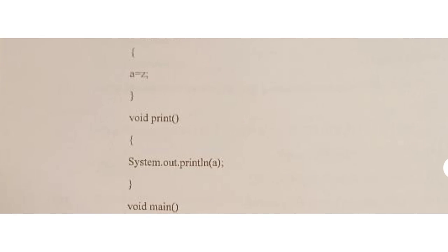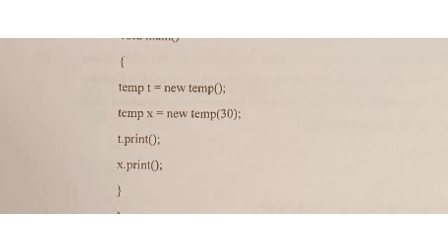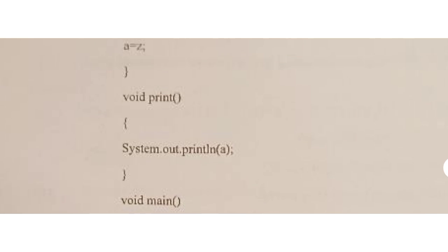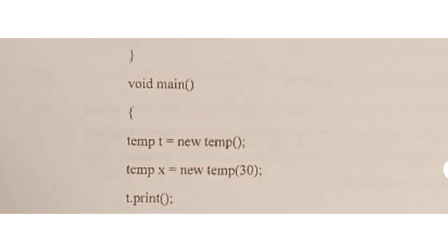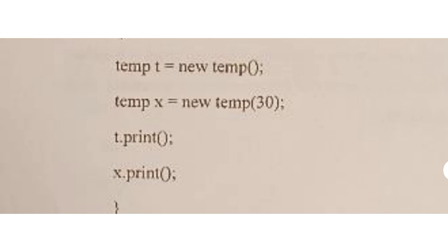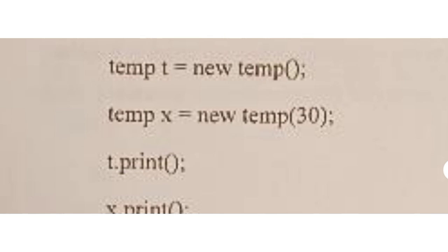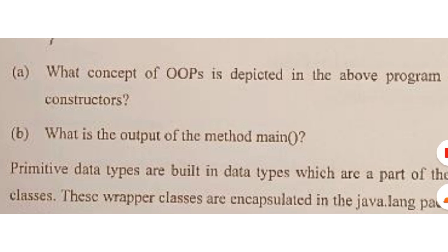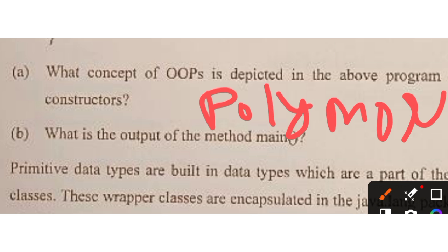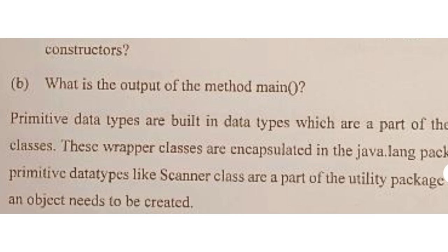Section B question nine: class Temp has a default constructor and a parameterized constructor. When object t1 is created with no argument, the default constructor runs and variable 'a' gets 10. When object t2 is created with argument 30, the parameterized constructor runs, 30 is copied to z, and 'a' becomes z = 30. When the print method is called, output is 30. The OOP concept depicted is polymorphism — specifically constructor overloading.